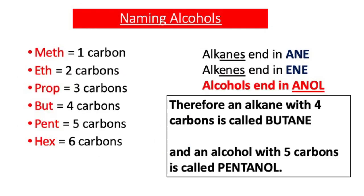The system for naming alcohols is very similar to the system for naming alkanes and alkenes. The first part of the word — meth, eth, prop, but, pent, hex — tells us the number of carbons present. So an alcohol with one carbon starts with M-E-T-H, and one with four carbons starts with B-U-T. When naming alkanes or alkenes, the second part is either -ane or -ene, but alcohols end in -anol. So an alcohol with five carbons is pentanol, four carbons is butanol, and three carbons is propanol.